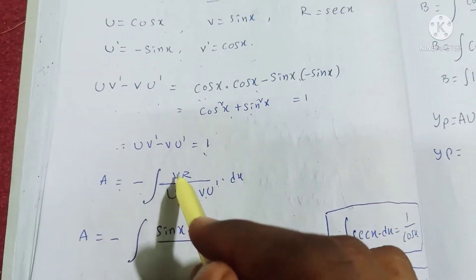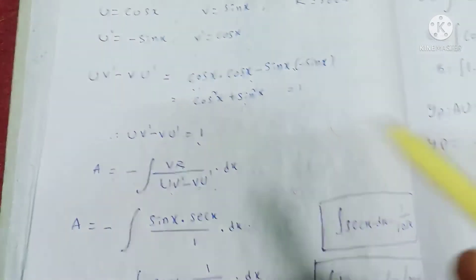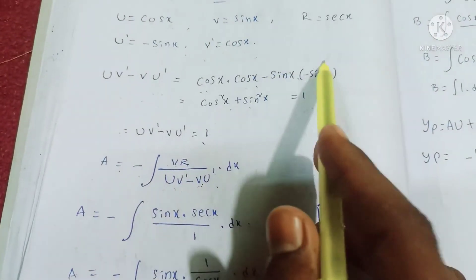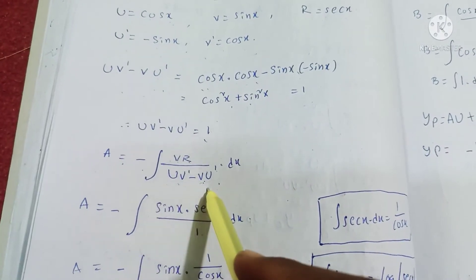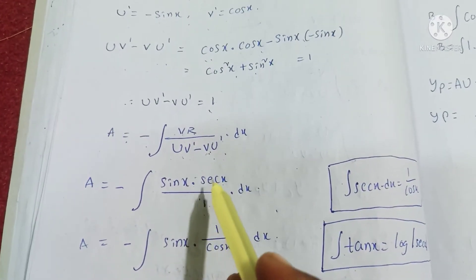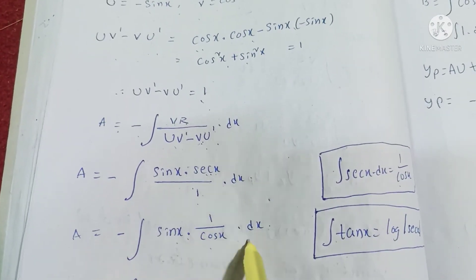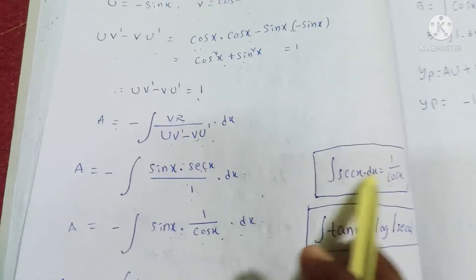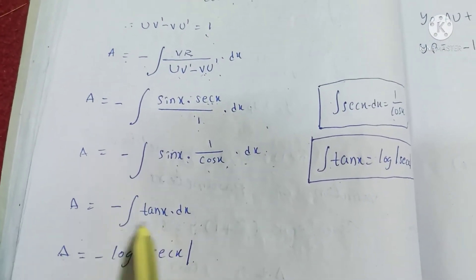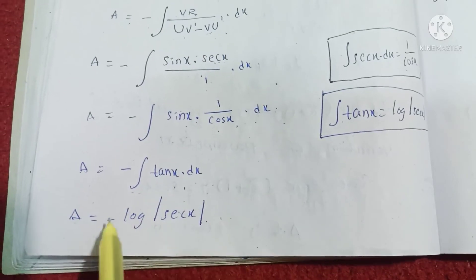A = −∫(vR / (uv′ − vu′)) dx = −∫(sin x · sec x / 1) dx. Since sec x = 1/cos x, we get sin x / cos x = tan x. So A = −∫tan x dx. The integration of tan x is log|sec x|, therefore A = −log|sec x| = log|cos x|.